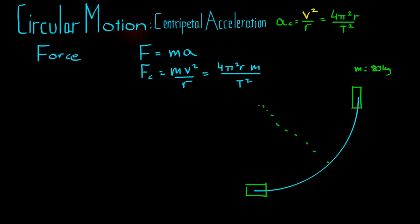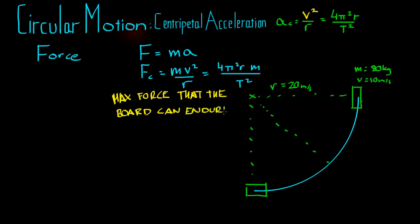And this skater has a mass of 80 kilograms. The radius of the turn, radius is given by, what have I got here? 20 metres. And the skater hopes to be able to turn from here to here at 10 metres a second speed. However, here's the problem.